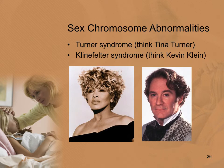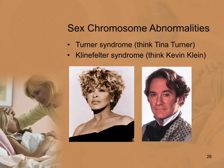The two sex chromosome abnormalities covered are Turner syndrome and Klinefelter syndrome. A memory trick: Turner syndrome — think Tina Turner (a girl), and Klinefelter — think Kevin Kline (a boy). Turner syndrome affects girls only and involves the absence of one X chromosome, with an incidence of one in 2,500 births. Klinefelter syndrome is the most common chromosome abnormality, occurring in one in 500 to 1,000 male births, with a presence of one or more additional X chromosomes, most commonly XXY.